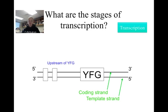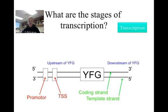The segment of DNA to the left of your favorite gene is known as upstream, while the segment to the right is downstream. Two important areas on the DNA strand that are upstream of the target gene are known as the promoter and the transcription start site, or TSS for short.